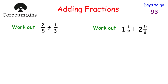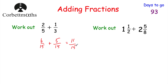So we've got: work out two fifths plus one third. When adding fractions with different denominators it's very important to get equivalent fractions with the same denominator. Because the denominators are 5 and 3, we find the lowest common multiple, which is 15. To get from 5 to 15 we multiply by 3, so 2 times 3 is 6 — giving us 6 fifteenths. To get from 3 to 15 we multiply by 5, so 1 times 5 is 5 — giving 5 fifteenths. So 6 fifteenths plus 5 fifteenths equals 11 fifteenths.